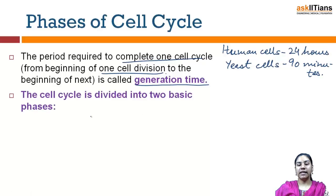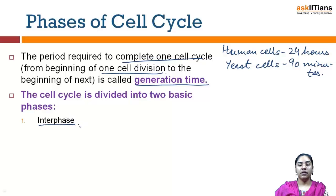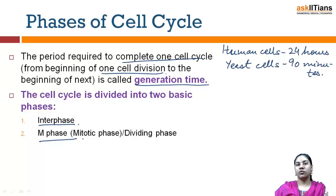The cell cycle is divided into two basic phases: interphase and the M phase, also known as the mitotic phase or the dividing phase.